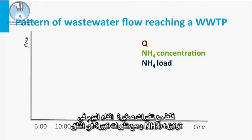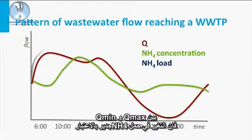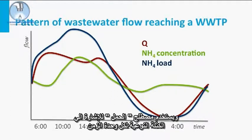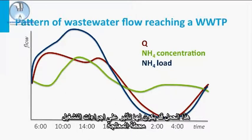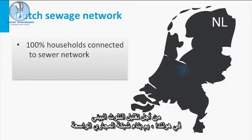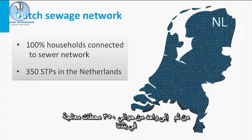With only little fluctuations in the diurnal ammonium concentrations, but strong fluctuations between Q-min and Q-max, the fluctuations in the diurnal ammonium load to the STPs are quite considerable. The term load is used to indicate a specific mass per time unit. The ammonium load will impact the biology of the system, and strong fluctuations in this load may impact the operational procedures at the STP. In order to minimize environmental pollution in the Netherlands, an extensive sewer network has been constructed, connecting about 100% of households to the sewer network and subsequently to one of the 350 STPs.